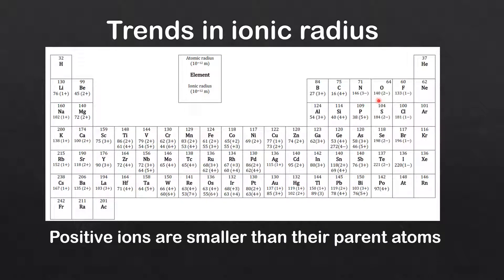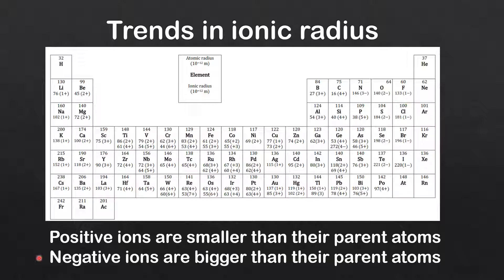Next we'll have a look at negative ions, starting with oxygen. Oxygen forms a 2− ion, and you can see that the ionic radius is 140 times 10 to the negative 12 meters, while the atomic radius is 64 times 10 to the negative 12 meters. So for negative ions, the ionic radius is greater than the atomic radius. For chlorine, which forms a 1− ion, the ionic radius is also bigger than the atomic radius. So from these examples, we can see that negative ions are bigger than their parent atoms.